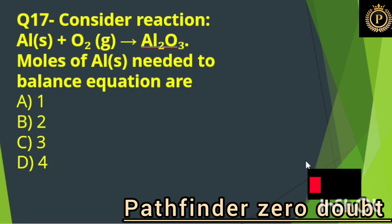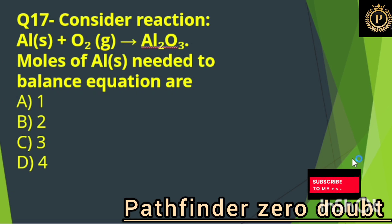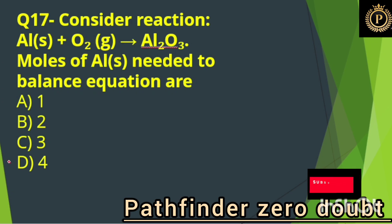Consider the reaction. The moles of aluminium needed to balance the equation are: Option D, 4.